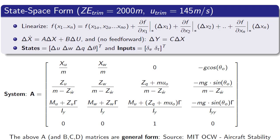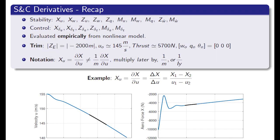The next big thing is to calculate the stability and control derivatives. This was obtained from the nonlinear model by doing a small linear approximation along the trim condition. You can see here that the trim speed was about 145 meters per second and a small linear approximation was taken along that point.